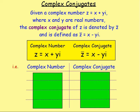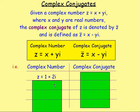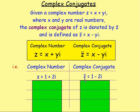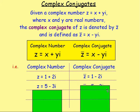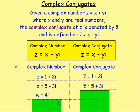Let's find some complex conjugates. If Z = 1 + 2i, then Z̄ = 1 − 2i — real part stays, imaginary part changes sign. If Z = 5 − 3i, then Z̄ = 5 + 3i — the imaginary part changes from −3i to +3i.